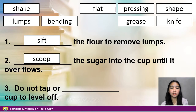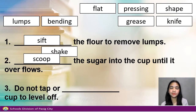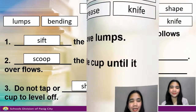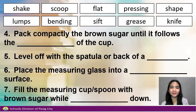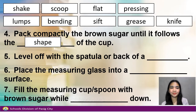Number 3. Do not chop or blank cup to level off. Number 4. Pack compactly the brown sugar until it follows the blank of the cup. Answer: Shape.